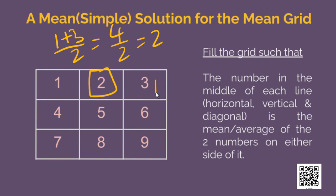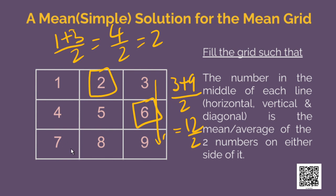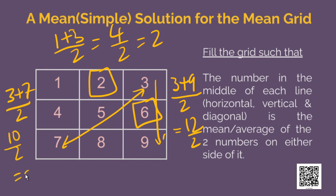Similarly, we can also verify this column. The average of the numbers on its sides is 3 plus 9 by 2, which is 12 divided by 2, which is nothing but 6. So, this is also correct. Now, we will also check the diagonal. So, 3 plus 7 divided by 2 is 10 by 2, which is 5. This is also valid. Similarly, you can check that all the values are averages of the numbers on their sides.